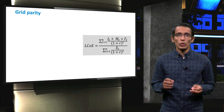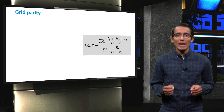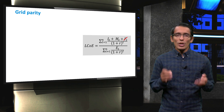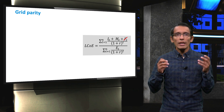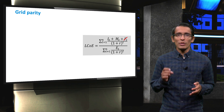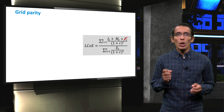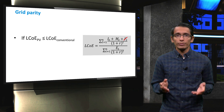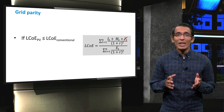In the previous lecture, you learned that the LCOE, or Levelized Cost of Electricity, can be defined as the price per kilowatt hour of a given energy source. We know that PV has no fuel costs, making this calculation relatively simple. For PV to be competitive with some conventional power, its LCOE must be lower than that of conventional power. Reaching this point is known as reaching grid parity.